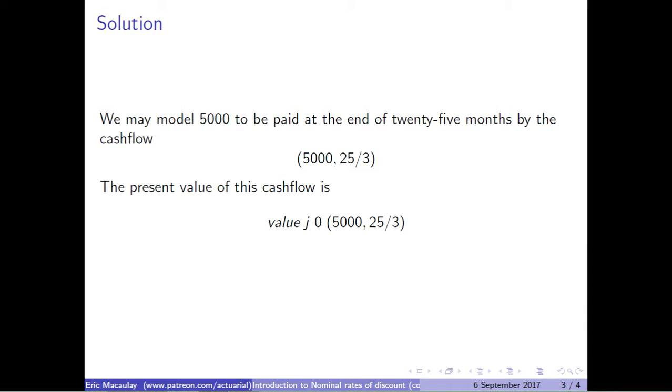Now the present value of this cash flow will be value of j of 0 of 5,000 at 25 over 3, where j is the rate of interest per quarter compounded quarterly. Now observe.